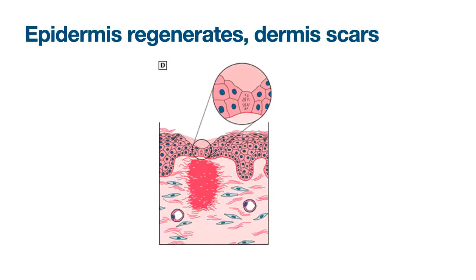Looking more closely at what happens in the dermis — the dermis has a different response to injury than the epidermis. At the time of healing, most of the capillaries of the granulation tissue have been reabsorbed. But as this picture shows, the dermis is not regenerated. In its place, you have a dense, relatively avascular scar composed mainly of type 1 collagen. This leads to an important point: while epidermis regenerates, dermis scars.